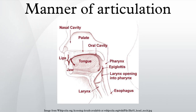Approximant: where there is very little obstruction. In some languages such as Spanish, there are sounds that seem to fall between fricative and approximant. Semivowel, sometimes called a glide, is a type of approximant pronounced like a vowel but with the tongue closer to the roof of the mouth, so that there is slight turbulence. In English, /j/ is the semivowel equivalent of the vowel /i/, and /w/ is the semivowel equivalent of the vowel /u/. Other descriptions use semivowel for vowel-like sounds that are not syllabic, but do not have the increased stricture of approximants.